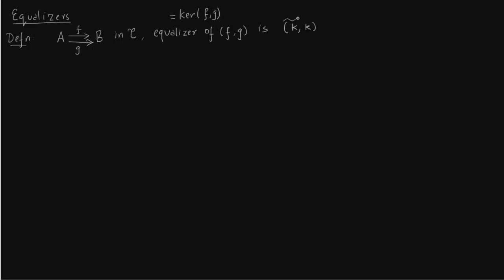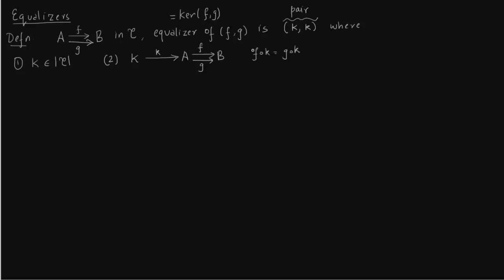The second k is an arrow or morphism. We have the following two conditions: first, K is an object of category C, and second, k is an arrow such that composing k then F equals composing k then G, i.e., F∘k = G∘k.